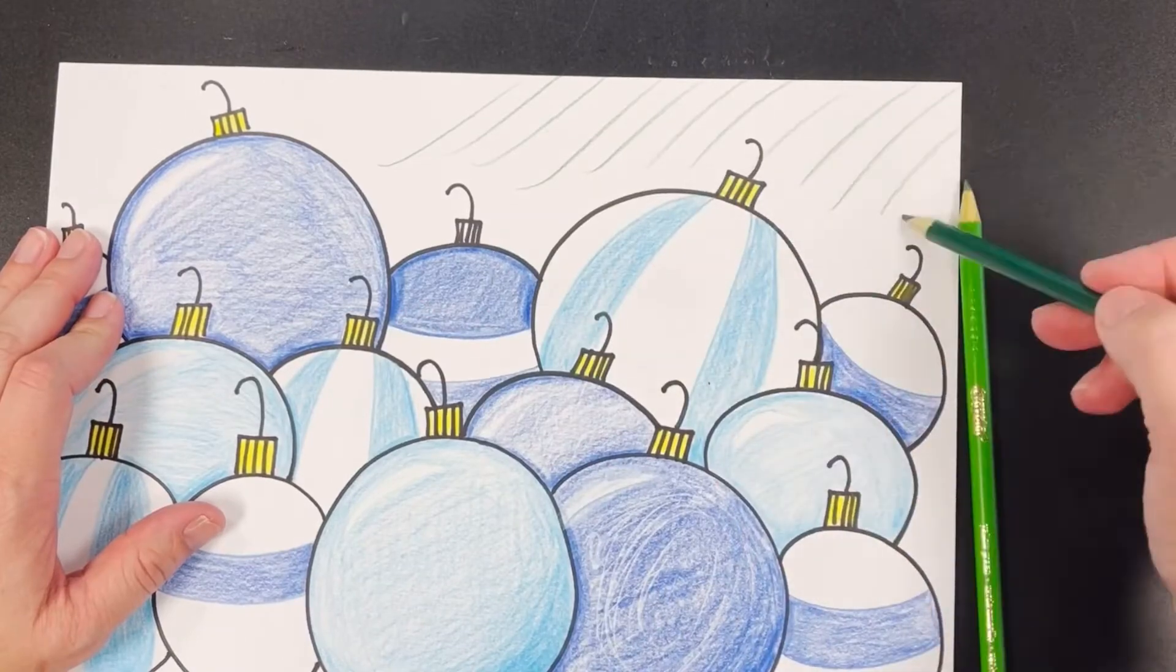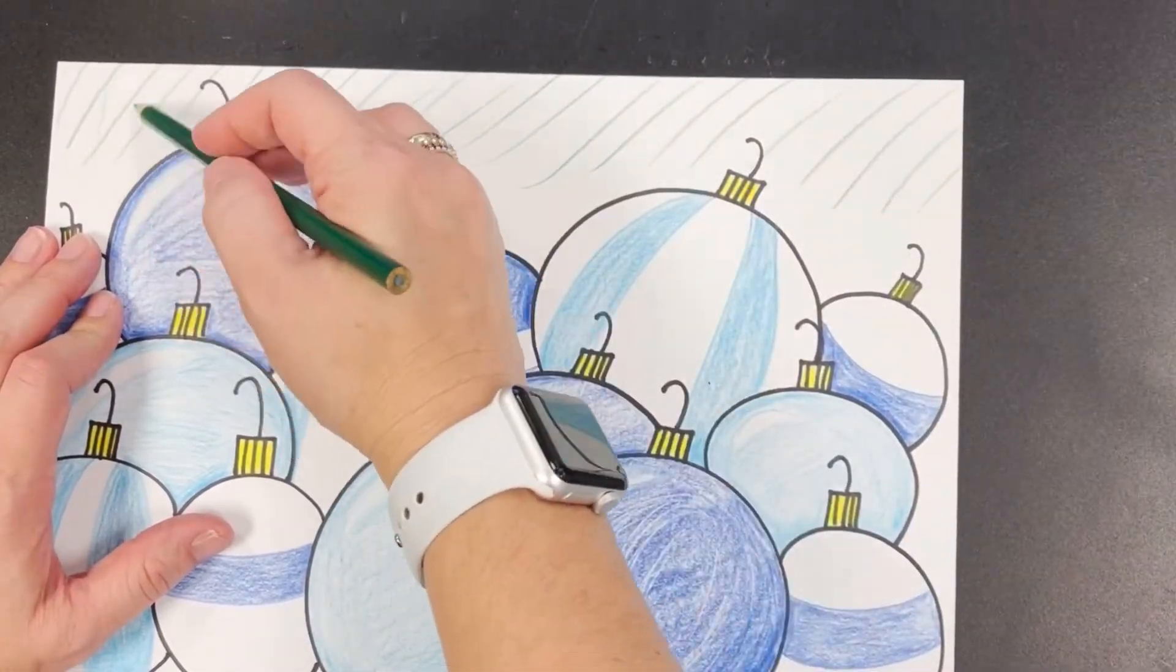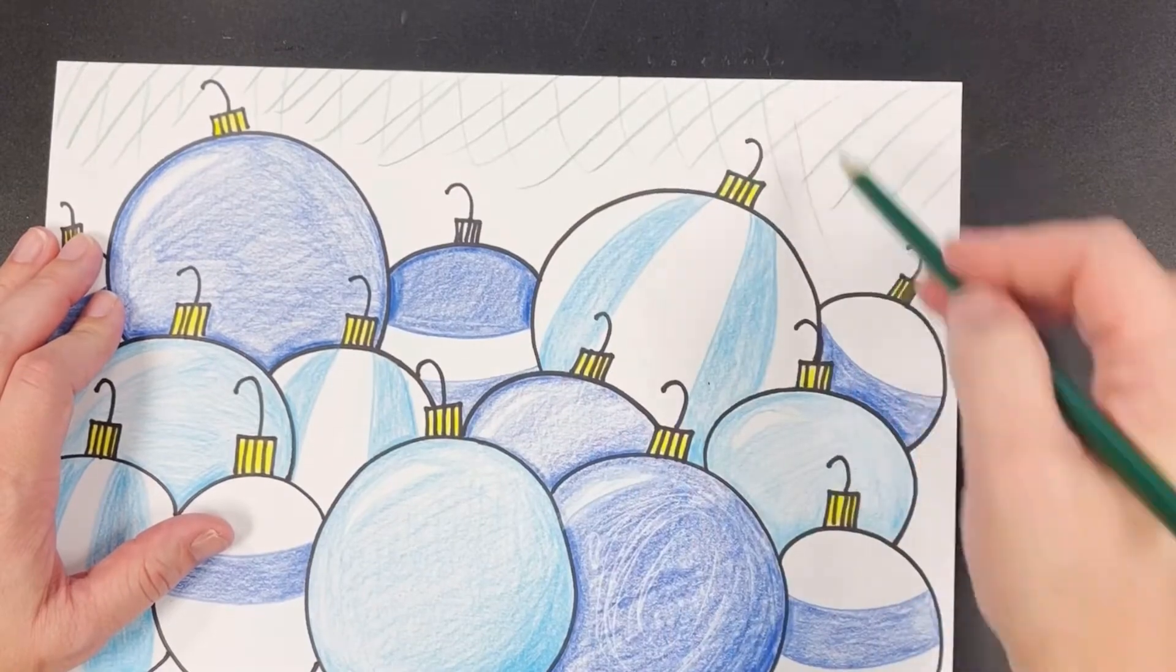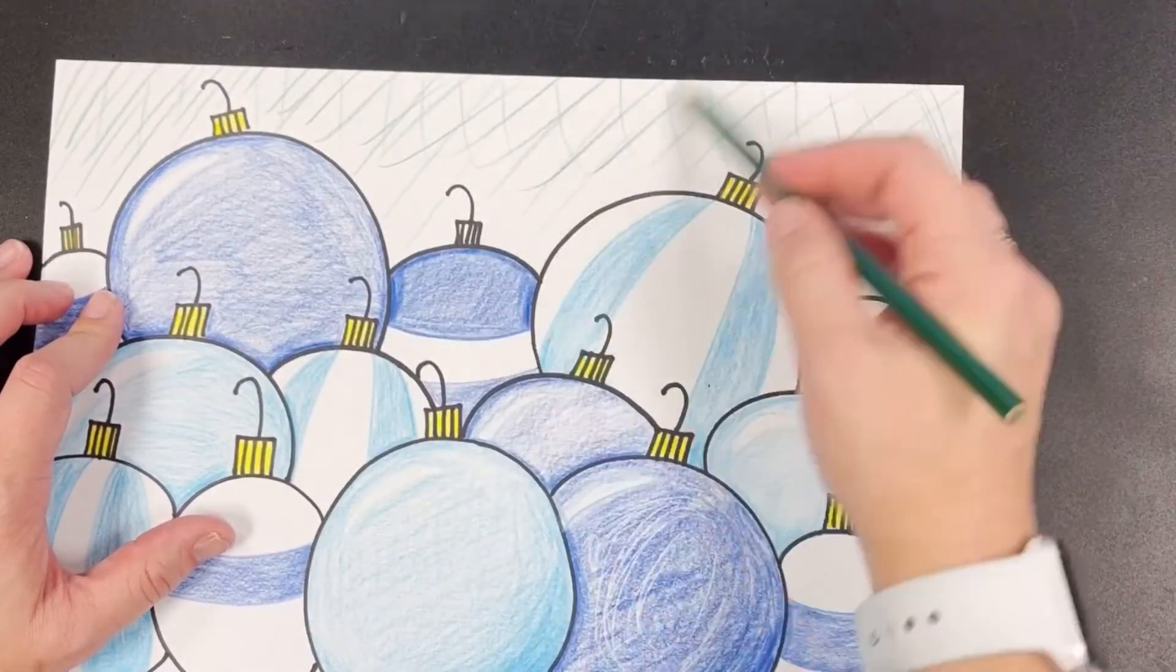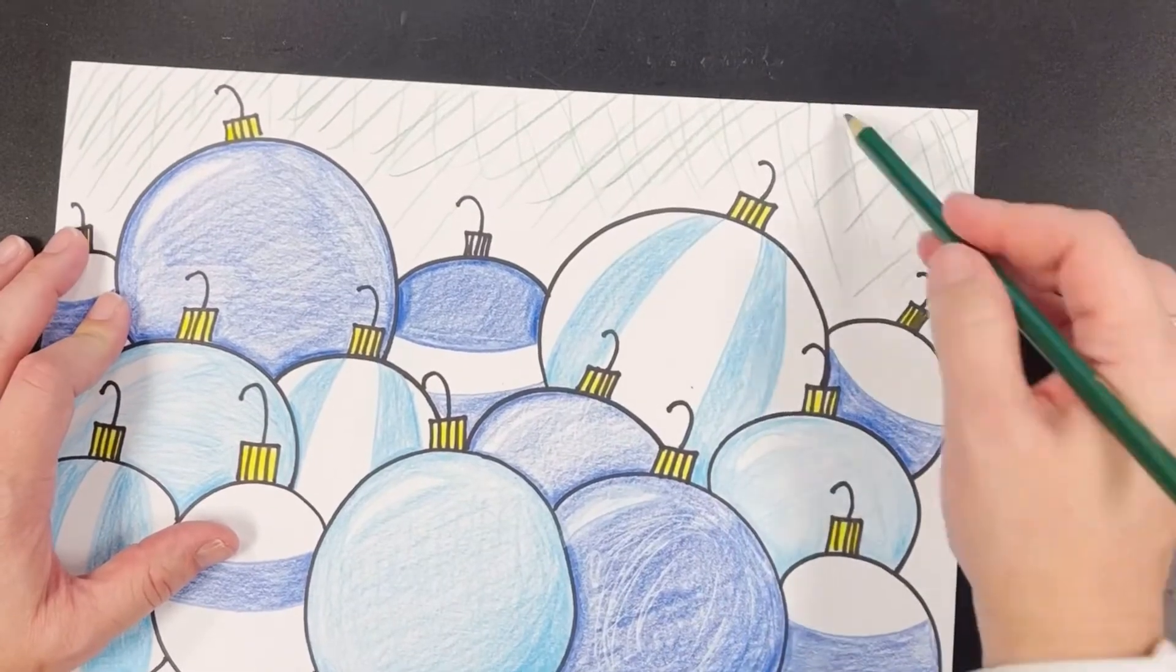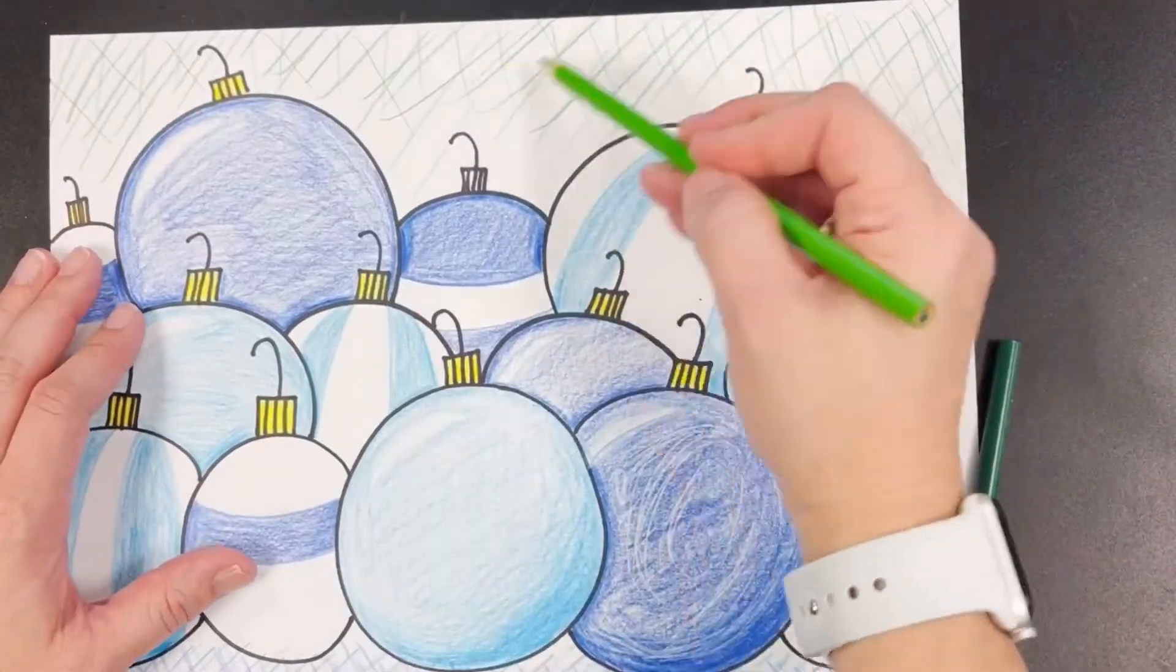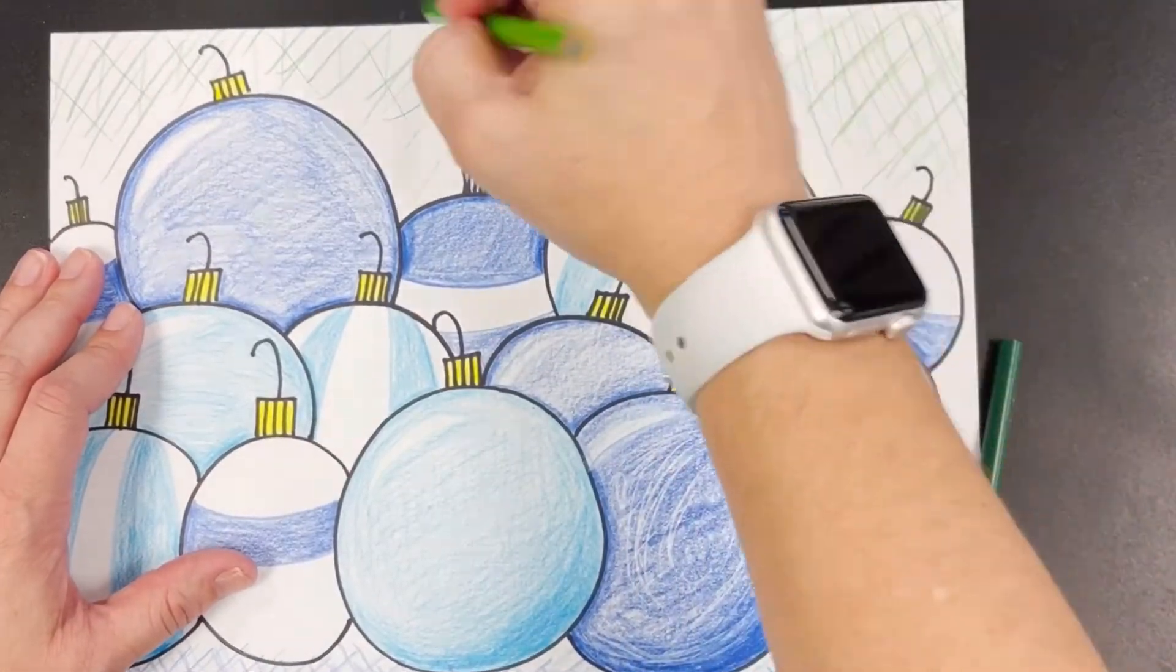Next you're going to add the tree branches. I'm just doing diagonal lines, straight lines to mimic the idea of tree branches. Use two different shades or three different shades of green to make it look extra fun and festive.